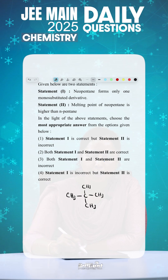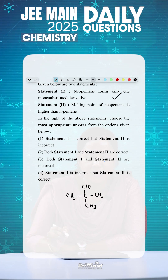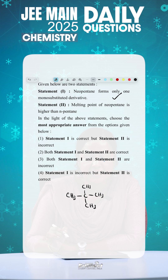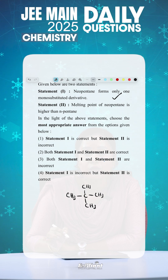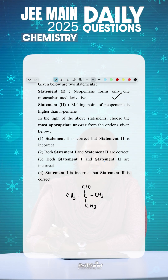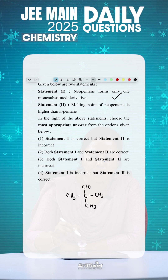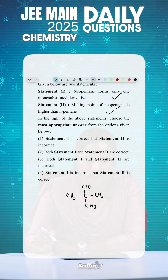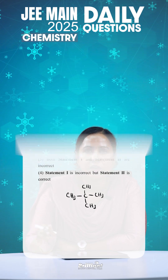Therefore, Statement one is correct. Statement two: the melting point of neopentane is higher than normal pentane, due to its spherical and symmetrical structure. Neopentane has the highest melting point among pentane isomers. Both statements are correct, so the answer is option two.